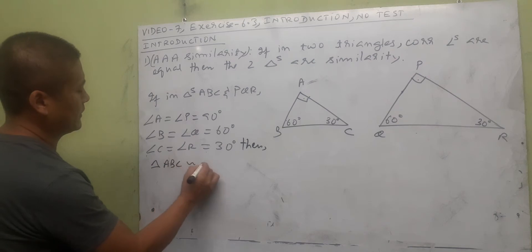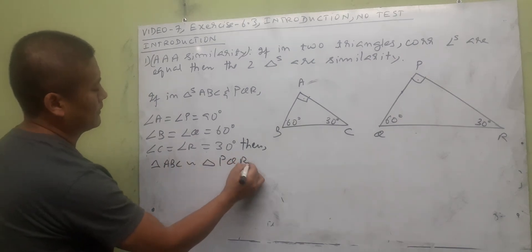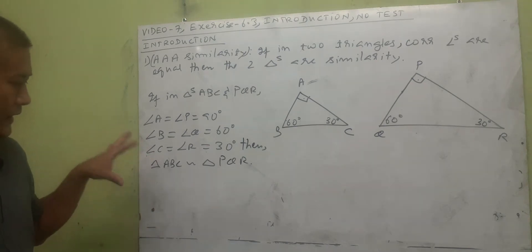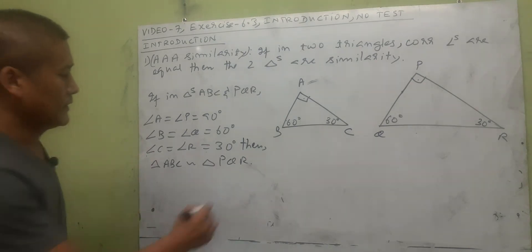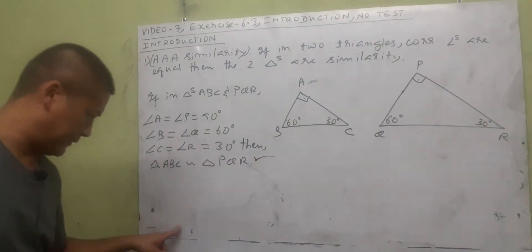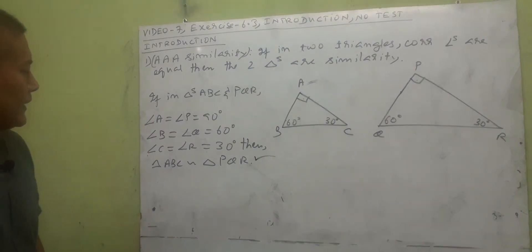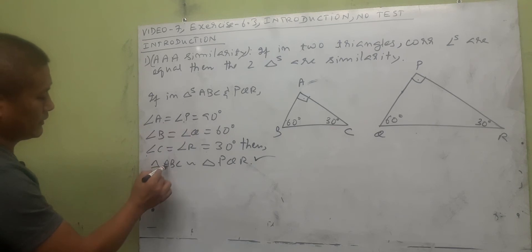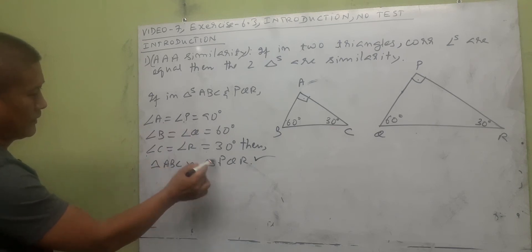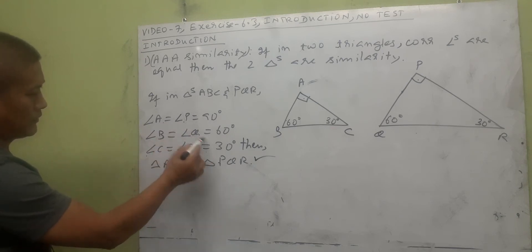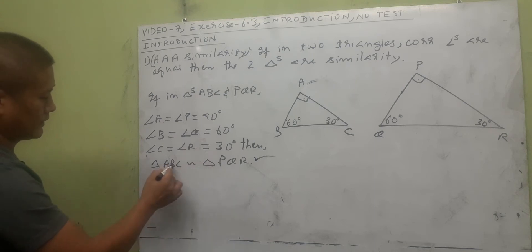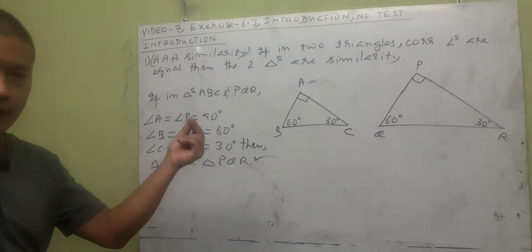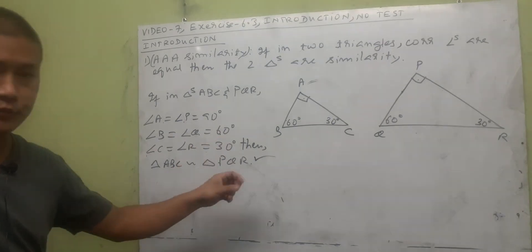Since all three angles are equal, triangle ABC is similar to triangle PQR. Now, this is the correct way of writing it — A and P are equal angles so they go in the same position first. B and Q are equal (60 degrees), so second letter to second letter. This is called corresponding order.